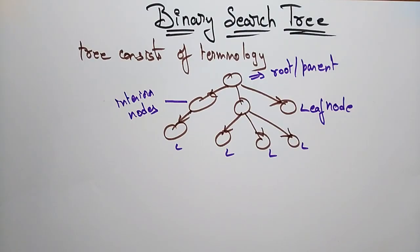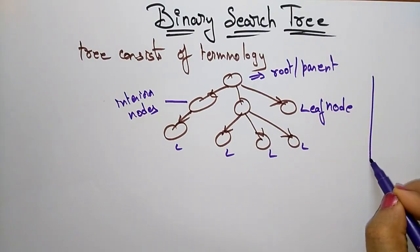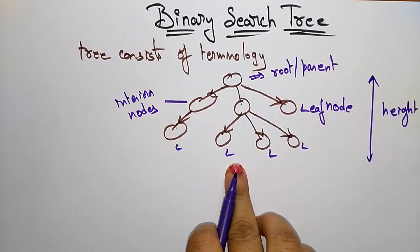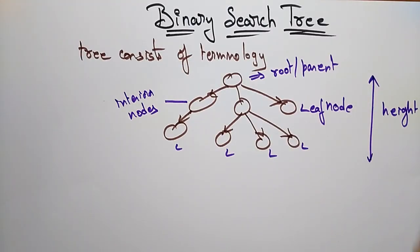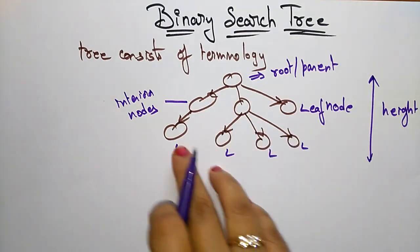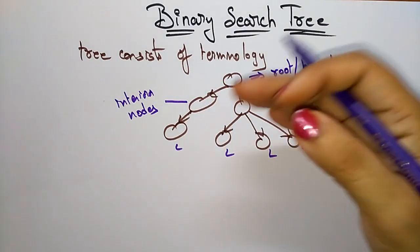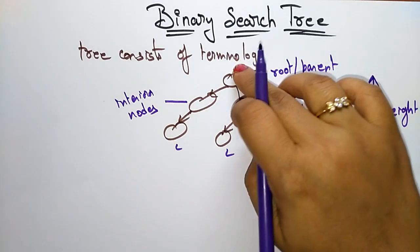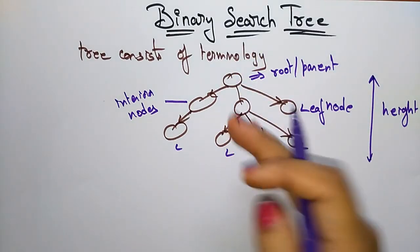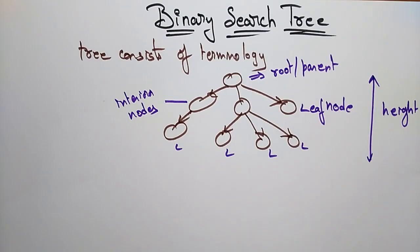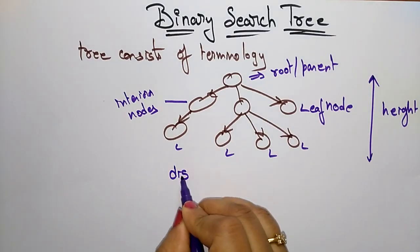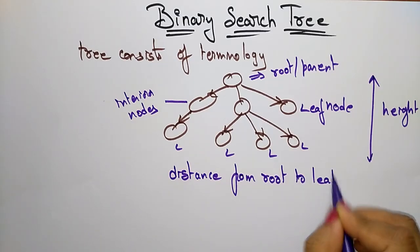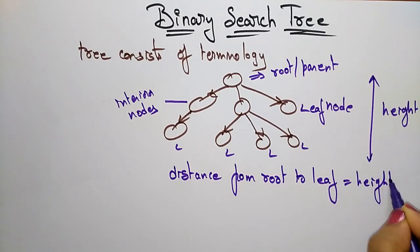Now let's see how to find out the height. This is the height of a tree. The distance from root to the leaf is called the height of that particular node. Each node's height will be calculated based on the distance from root to the leaf. The complete height will be calculated from root to the leaf — the distance between root to the leaf is determined as the height of a tree.